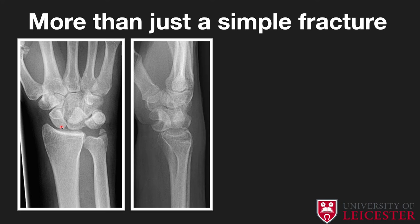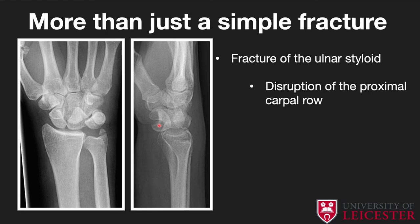Another example of more than a simple fracture: on the AP radiograph there is just an ulnar styloid fracture, the radius looks fine, but the capitate looks odd as it should articulate with the lunate. Instead of a normal boat shape, the lunate shows a triangular appearance. On the lateral view the lunate has flipped out — this is a classical lunate dislocation.